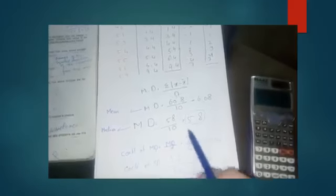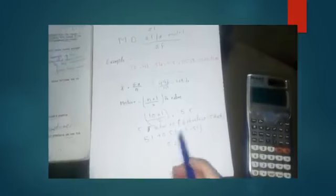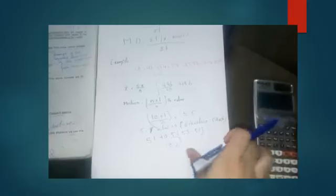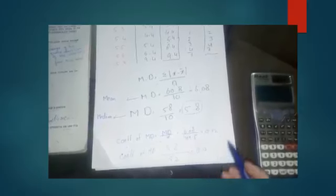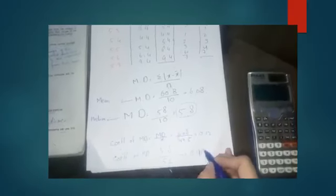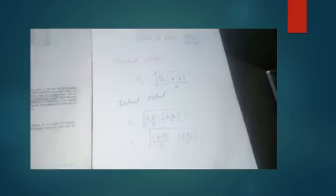So mean deviation divided by mean: 6.08 divided by 49.6 gives 0.12. For the median, the mean deviation is 5.8, divided by 52 which is the median. 5.8 divided by 52 gives 0.115. This is the answer. Now we move on to standard deviation.